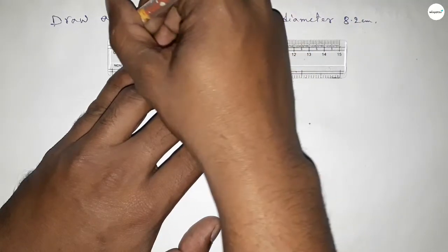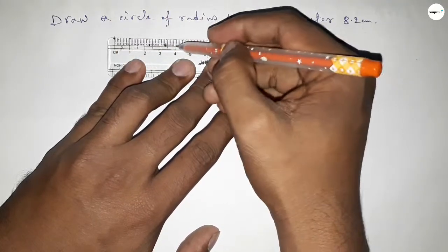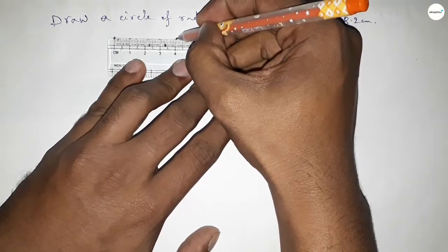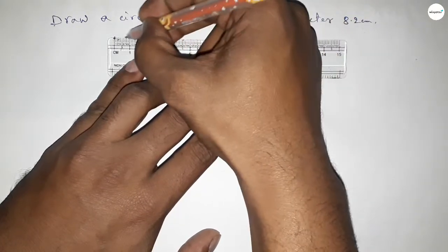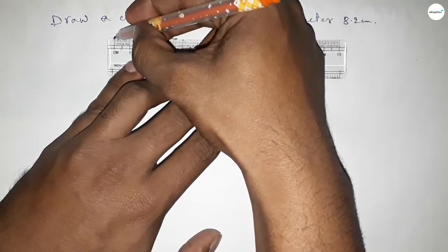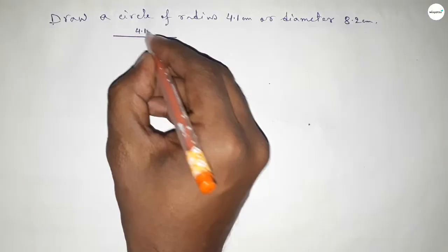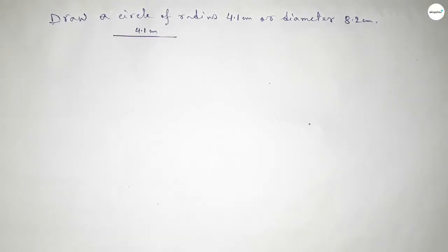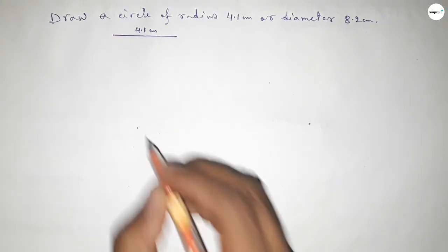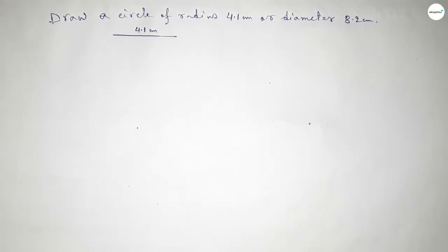4.1 centimeter. The radius of a circle is half of the diameter, so this is 4.1 centimeter. So first, drawing here the radius of the circle. This is 4.1 centimeter. Now next, taking here a point, then taking the length.